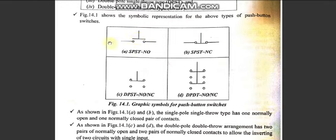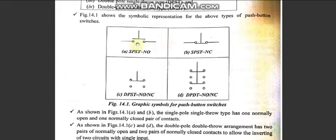Normally open means the contact is broken by default — when you push the button, the electrical current passes through; when not pushed, the circuit remains open. Normally closed means the circuit is closed by default and current always flows — when you push the button, the current is cut off.